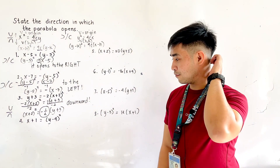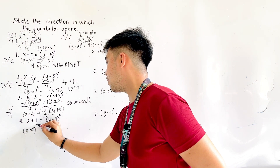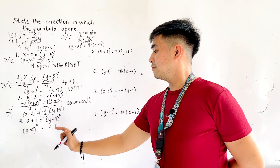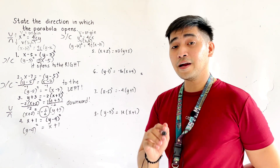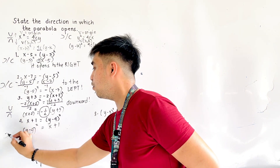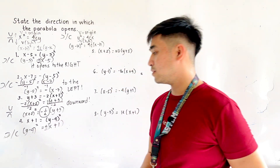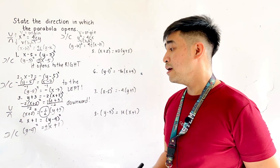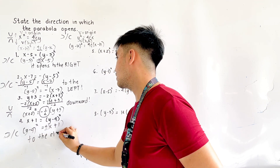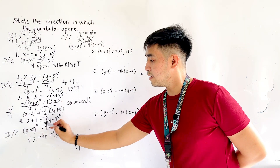For number 4, let's arrange. This becomes y minus 4 quantity squared is equal to x plus 1. Since we have y squared, it will open to the left or to the right. But since the right side is positive, we could say that this is opening to the right.